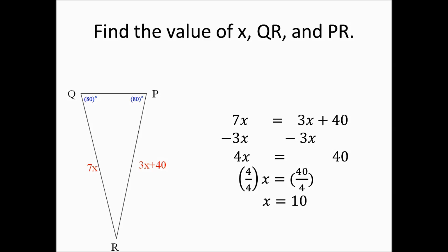Now we substitute 10 for X into the expressions for the sides. 7 times 10 equals 70. For side PR, we substitute 10 for X: 3 times 10 plus 40 equals 30 plus 40, which equals 70. Both sides are confirmed to be 70 units.